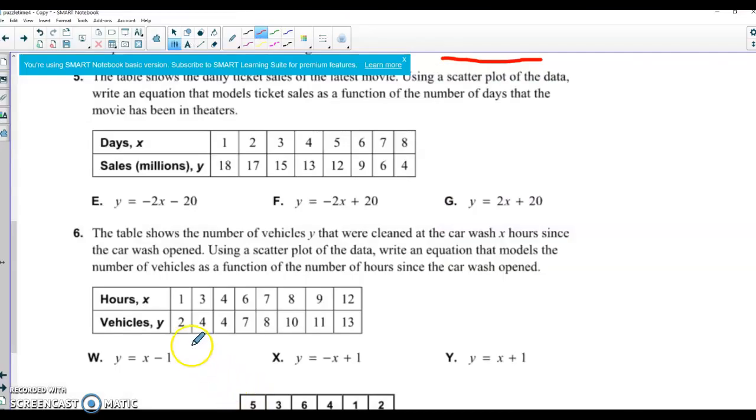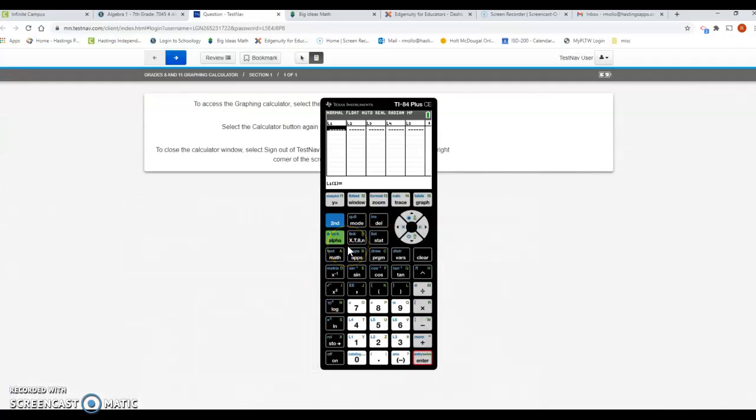And so remember, L1 should be those lists of X's there. So 1, 2, 3, 4, 5, 6, 7, 8. L2 should be my lists of Y's, so 18, 17, 15, 13, 12, 9, 6, and 4. And make sure we put them in, in that order, otherwise it's going to change then. And then that'll mess with our answer.